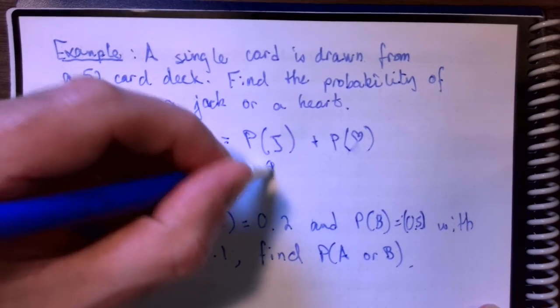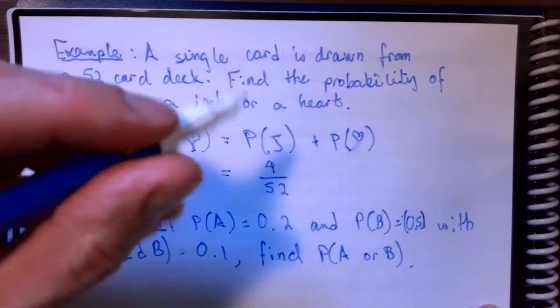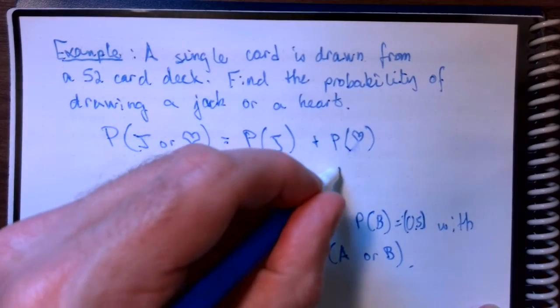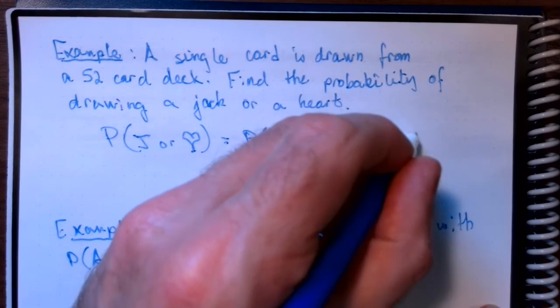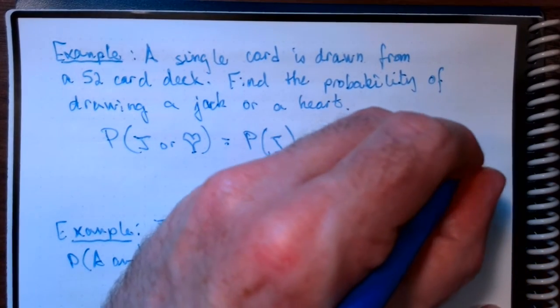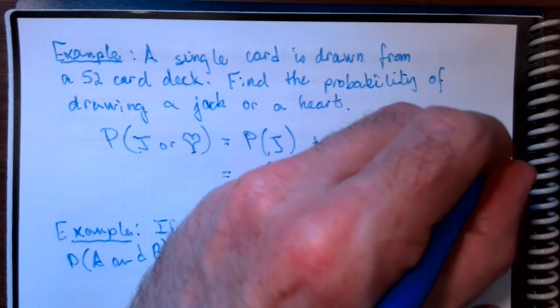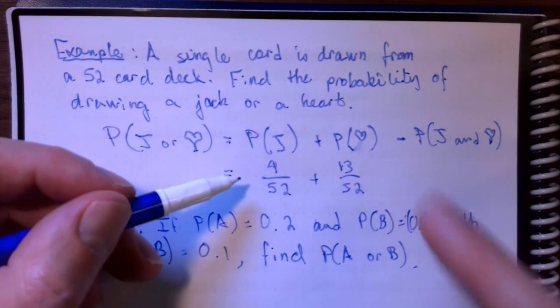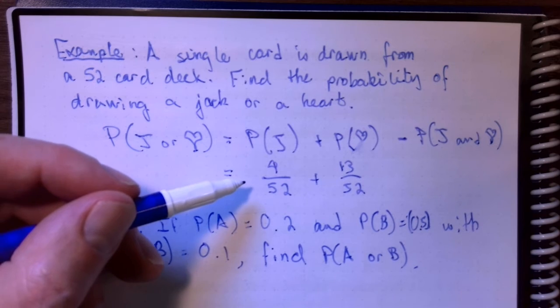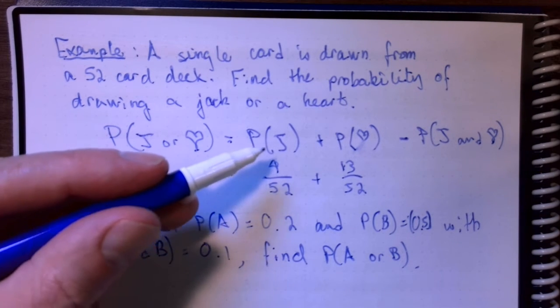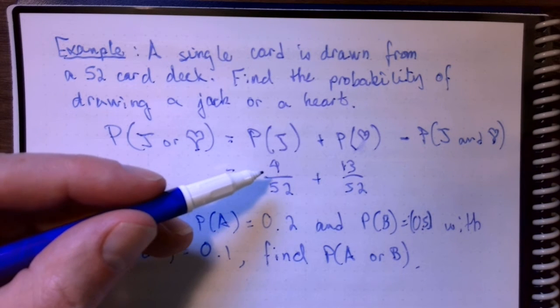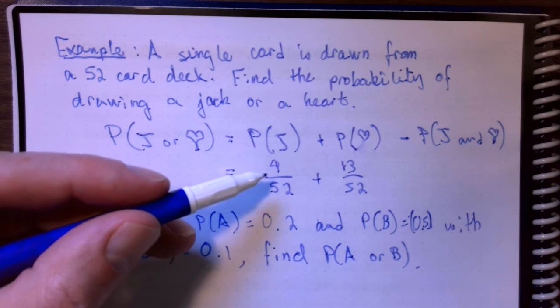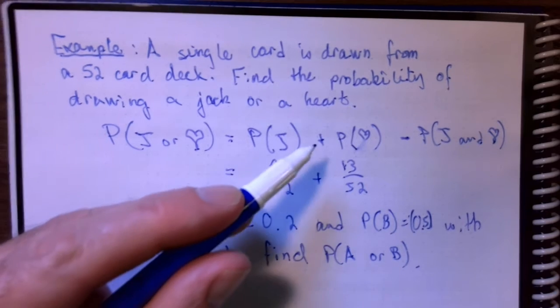So, we've got to take the probability of a jack plus the probability of getting a heart in our draw. As we just discussed, there are four jacks in the deck. So, the probability of a jack is 4 out of 52. The probability of a heart is 13 out of 52. Now, there's something I have not accounted for yet. I have to realize that if I leave this as it is right now, I am over-counting.